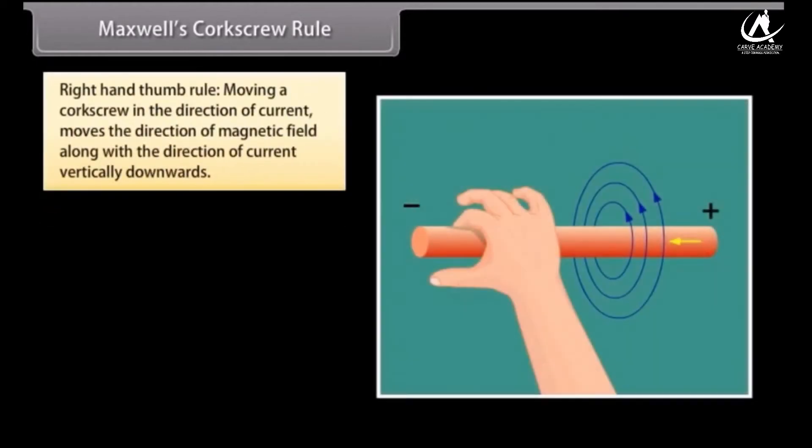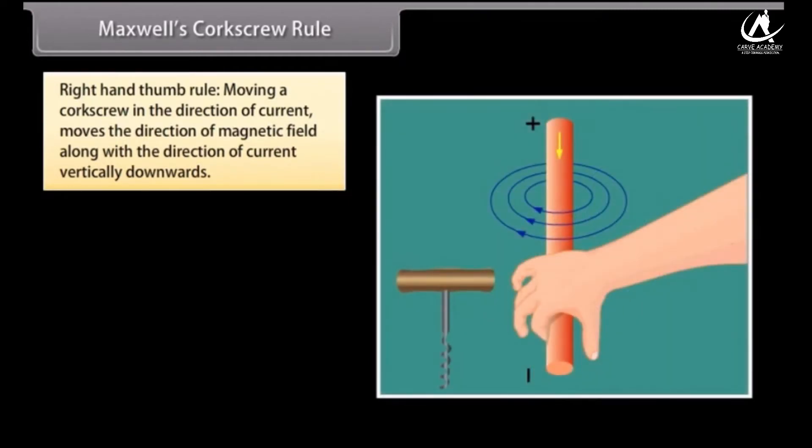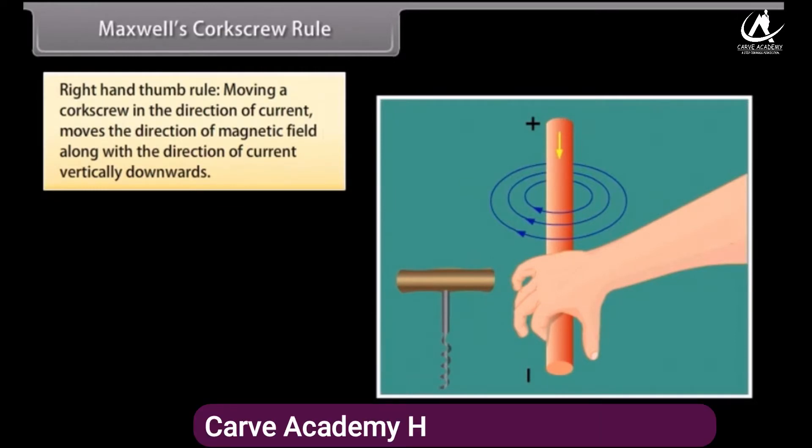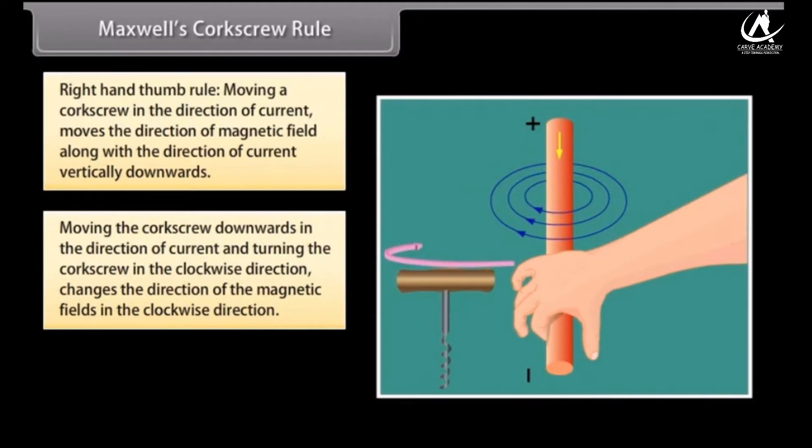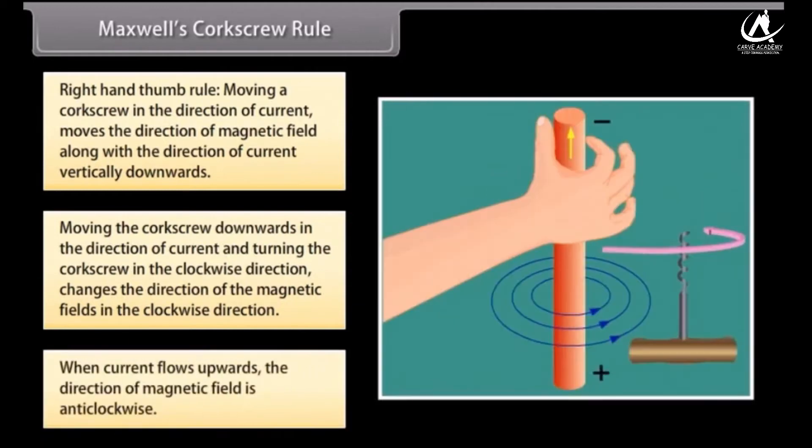Maxwell's Corkscrew Rule, also known as Right-Hand Thumb Rule, defines that moving a corkscrew in the direction of current moves the direction of magnetic field along with the direction of current vertically downwards. If we move the corkscrew downwards in the direction of current and the handle of corkscrew is turned in the clockwise direction, then the direction of the magnetic fields is in the clockwise direction. So when current flows upwards, the direction of magnetic field changes and is anticlockwise.